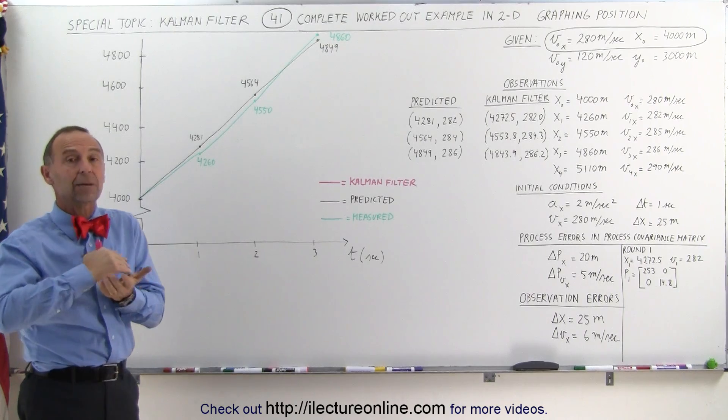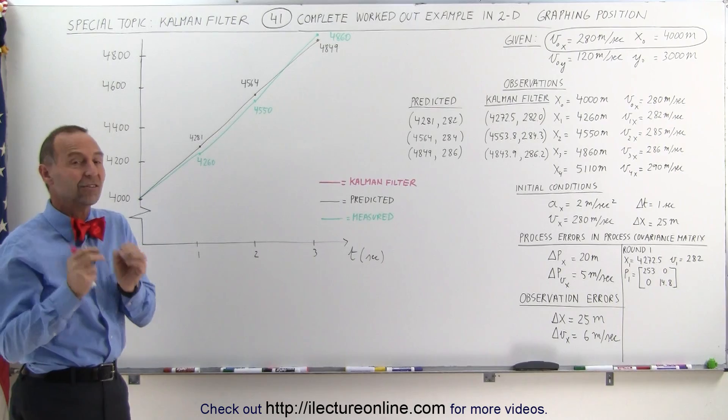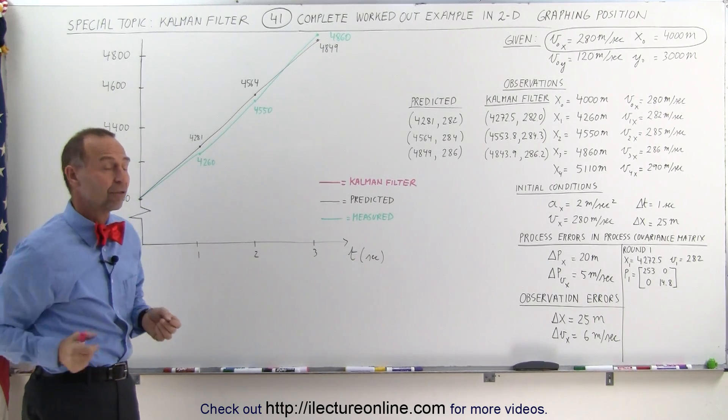And thirdly, we then put a Kalman filter on it. We just went through three rounds of that process, and we're going to see how those three values then stack up against the predicted and the measured values.